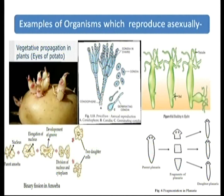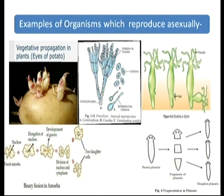Examples of asexual reproduction: in plants it is called vegetative propagation (e.g., potato). In fungi, it occurs through asexual spores called conidia. In Hydra, reproduction occurs through budding. In amoeba, it is through binary fission — one parent cell splits into two daughter cells. In some organisms, each fragment of the parent body gives rise to a new individual. These are all examples of asexual reproduction.